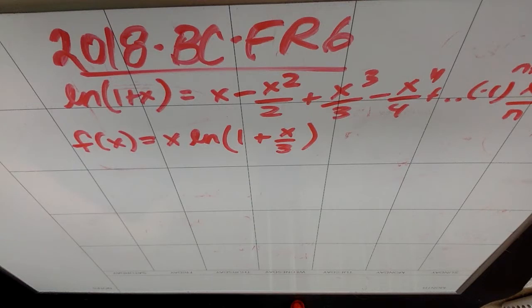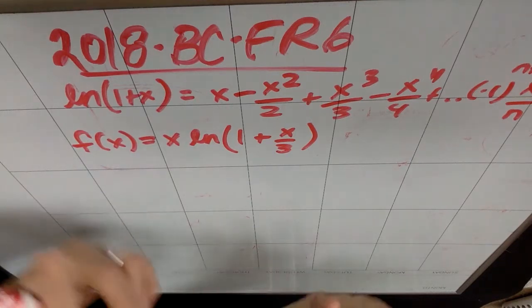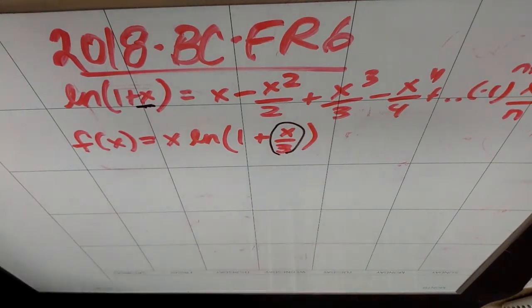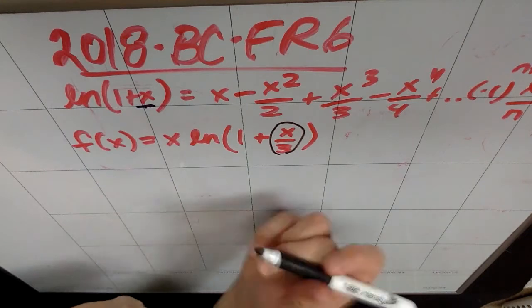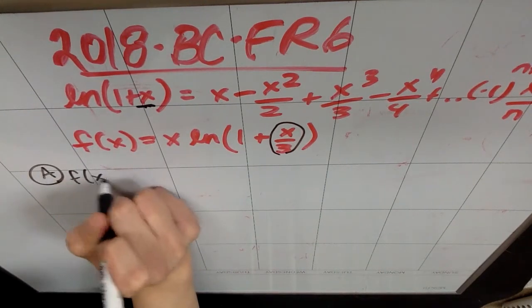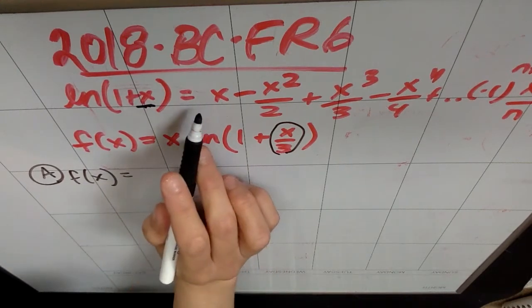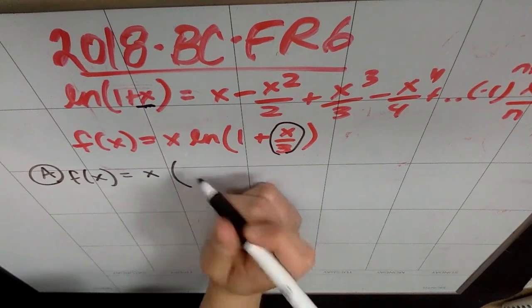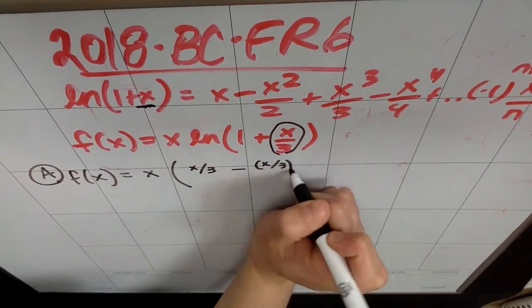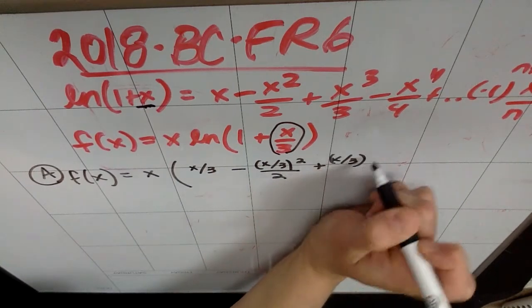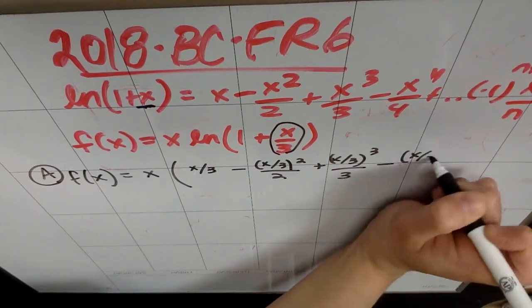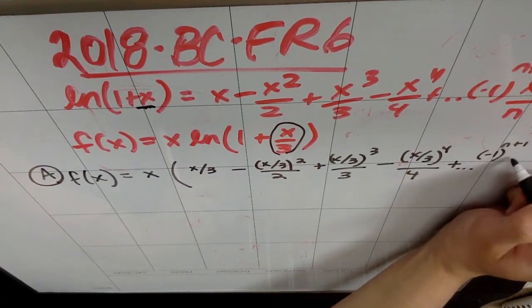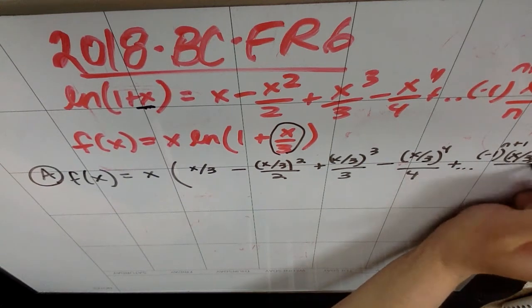Part A asks us to write the first four non-zero terms and the general term of the McLaurin series for f. Here's what's happening: I'm going to replace all the x's in the series they gave me with x over three, and I'm going to multiply the entire series by x. So my series becomes x times: (x/3) minus (x/3)² over 2 plus (x/3)³ over 3 minus (x/3)⁴ over 4 plus dot dot dot, with general term negative one to the n+1 times (x/3)ⁿ over n.